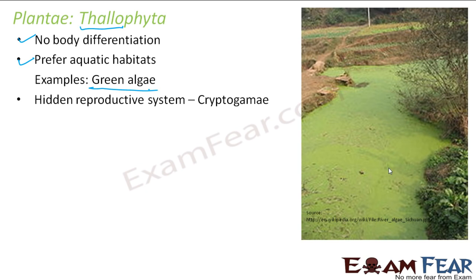In thallophyta, they have a hidden reproductive system, which is why they are known as cryptogamae. Hidden reproductive system means the reproductive structures are present inside small, inconspicuous structures — they are enclosed and not open. Plants with a hidden reproductive system are given the term cryptogamae. 'Crypto' means hidden, 'gamy' means marriage — marriage being related to reproduction. So they are called cryptogamae because they have a hidden reproductive system.